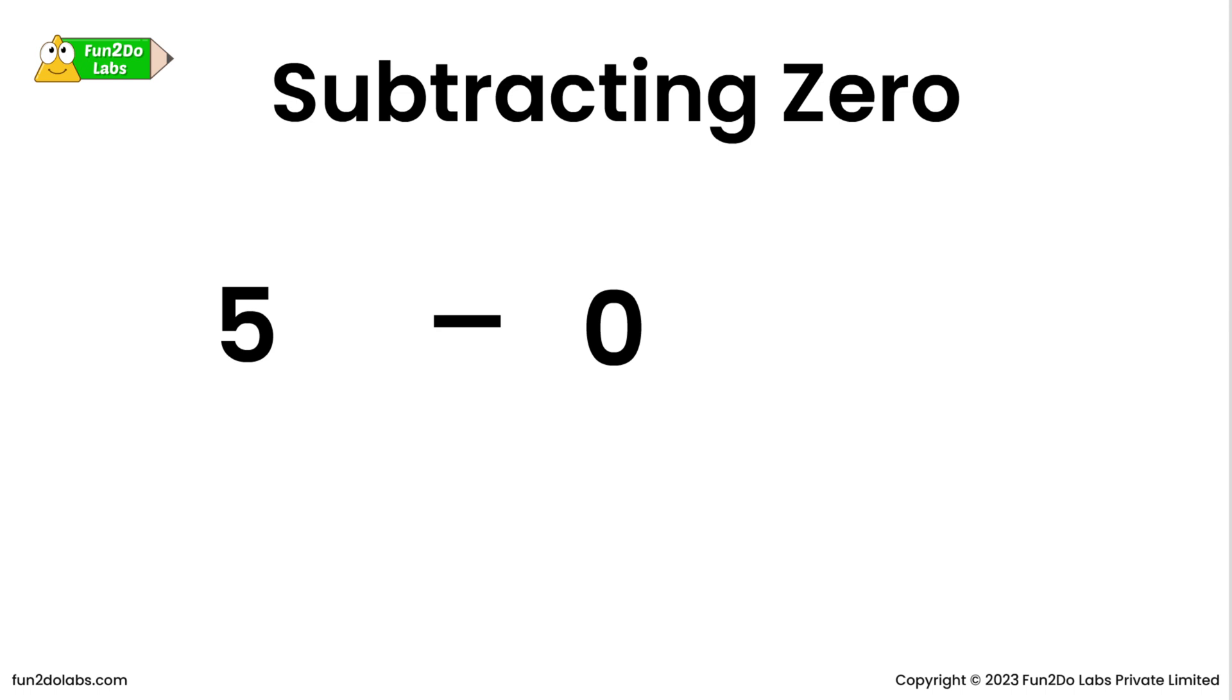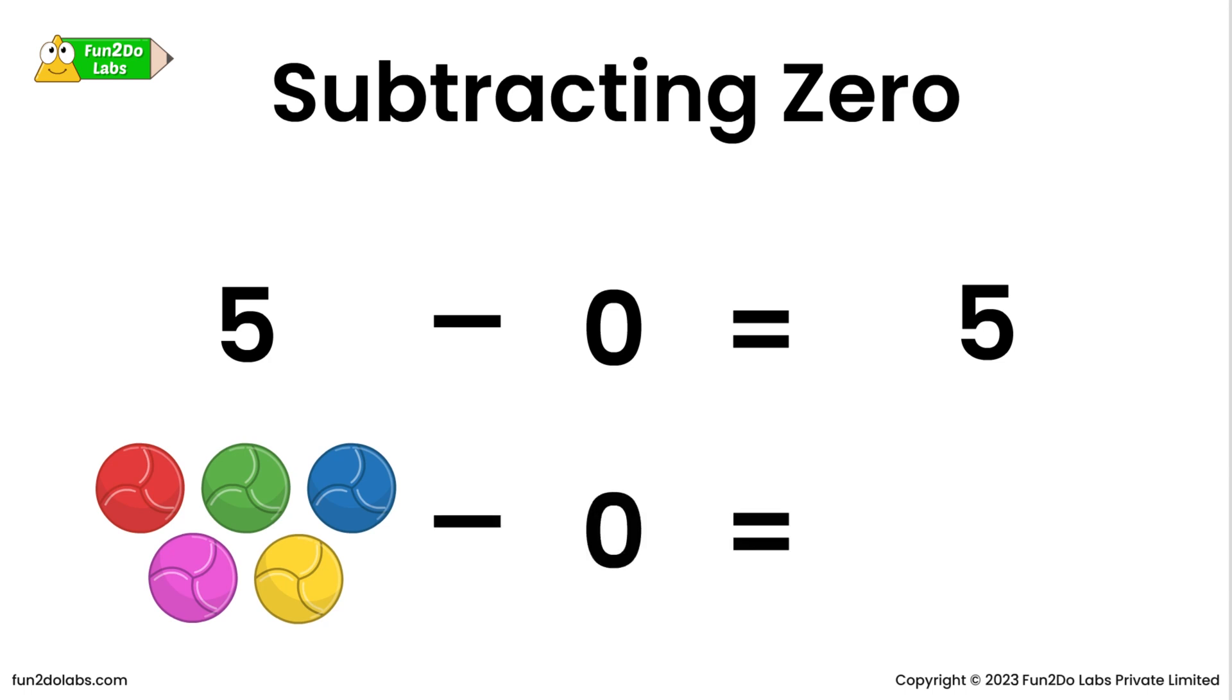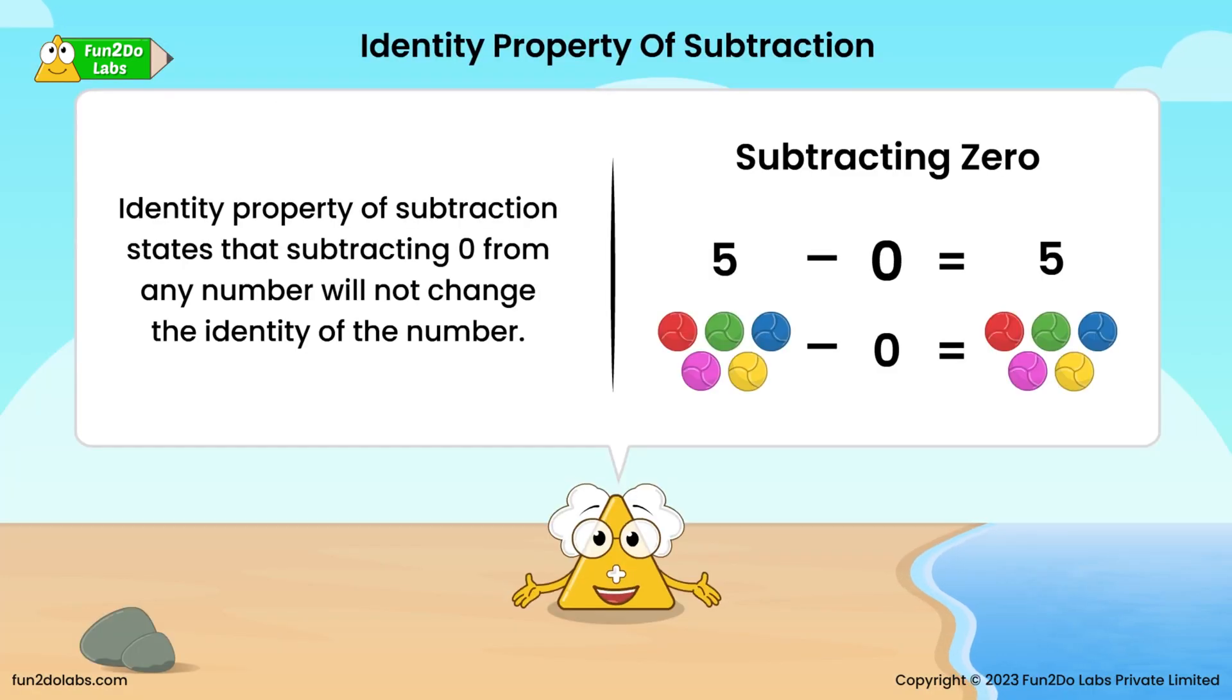If we subtract zero from five, the difference will be five. As you can see here, there are five balls total. If we take out zero balls from it, all five balls will remain as such, as subtracting zero leads to no change in the initial number.